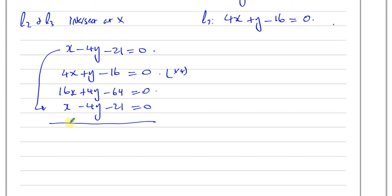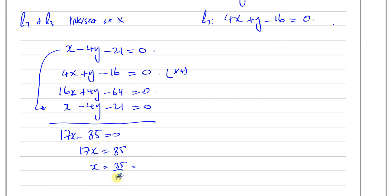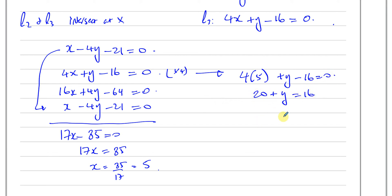Multiplying line 3's equation by 4 gives 16X plus 4Y minus 64 equals 0. Adding this to X minus 4Y minus 21 equals 0 eliminates Y, giving 17X minus 85 equals 0. So 17X equals 85, meaning X equals 5. Substituting X equals 5 into 4X plus Y minus 16 equals 0: 20 plus Y equals 16, so Y equals negative 4. So point X has coordinates 5, negative 4.